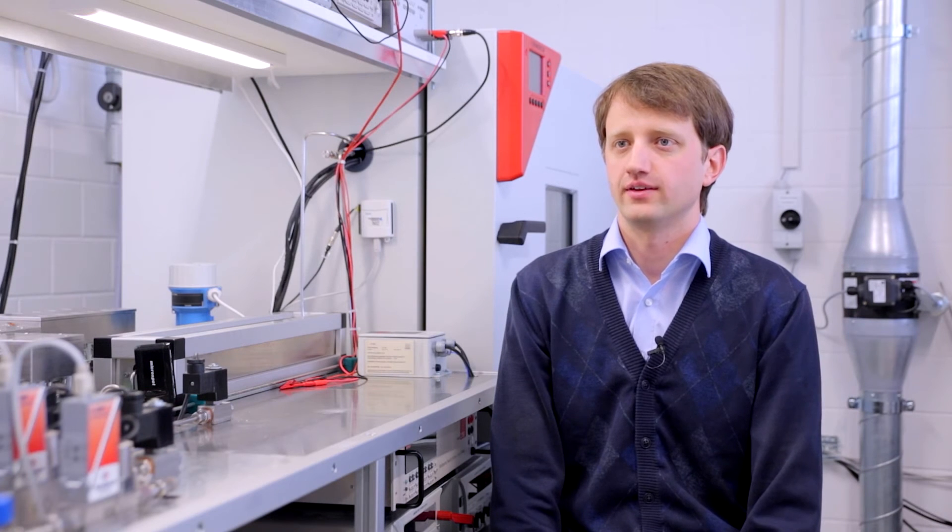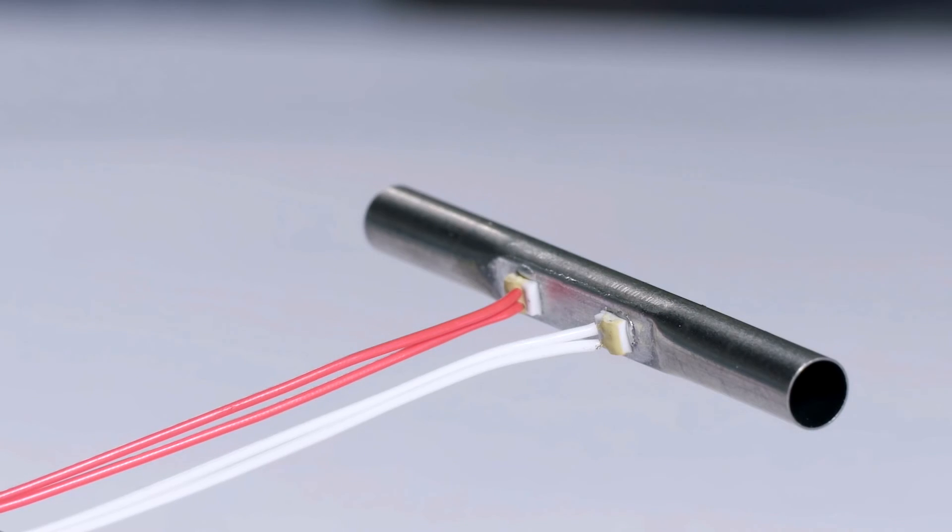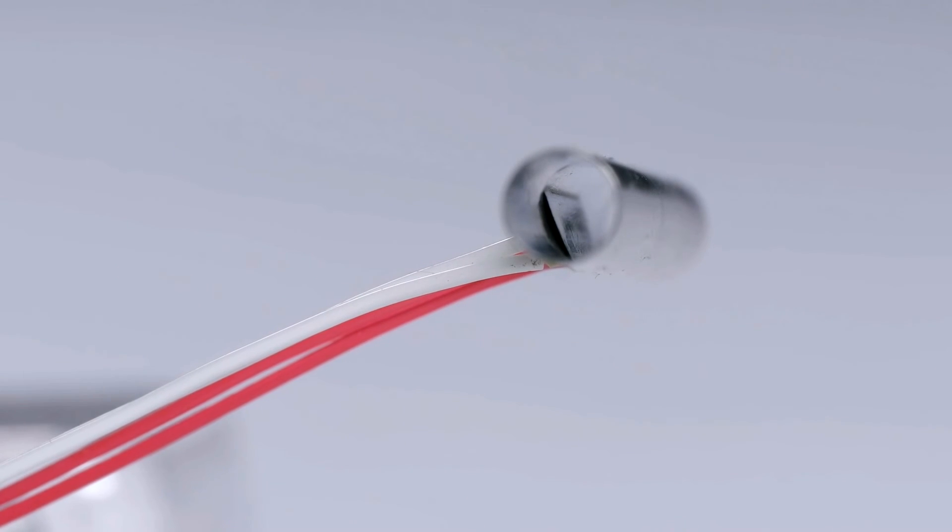We developed the out of liquid sensor to measure aggressive flowing gases and liquids. The resistive elements are soldered on a tube, thus providing good thermal contact to the fluid.